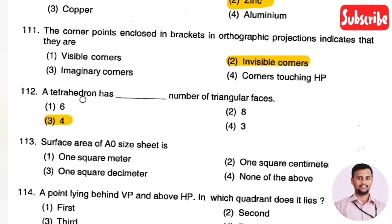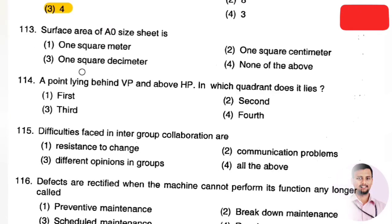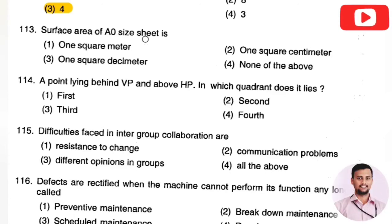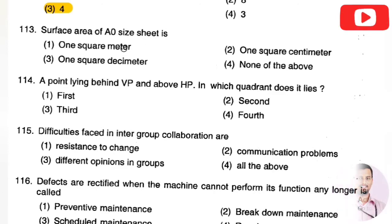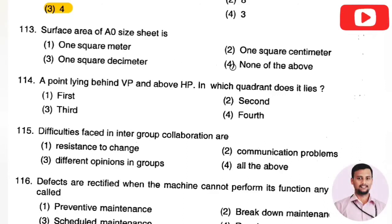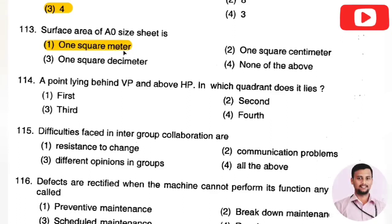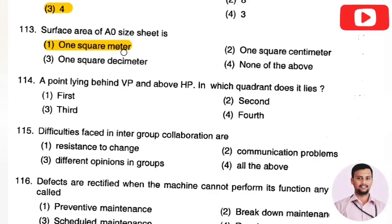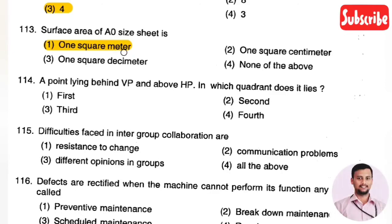The next question: the surface area of an A0 size sheet is — Option 1: one square meter, Option 2: one square centimeter, Option 3: one square decimeter, Option 4: none of the above. The right answer is Option 1, one square meter. A0 is the starting size paper with a surface area of one square meter.